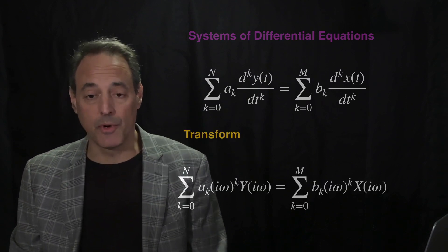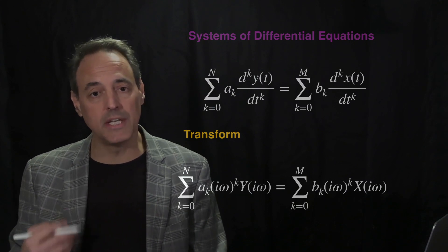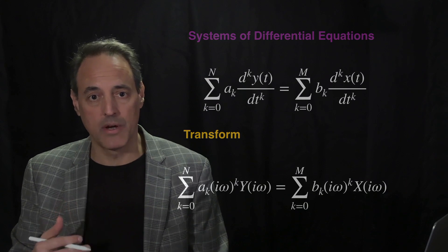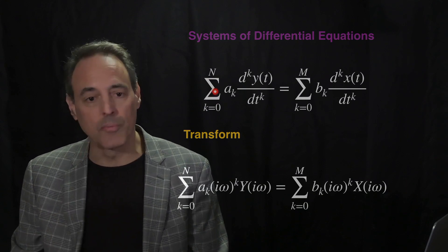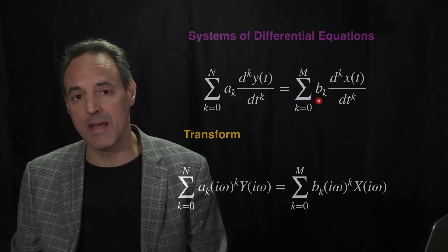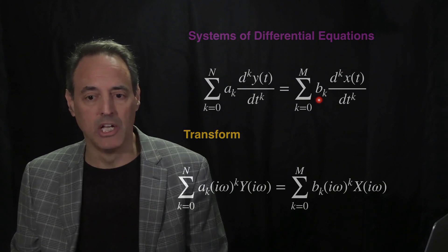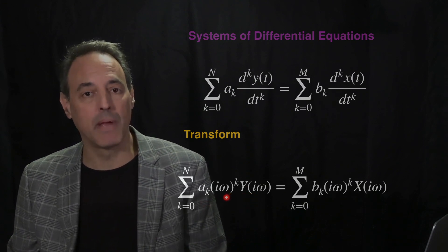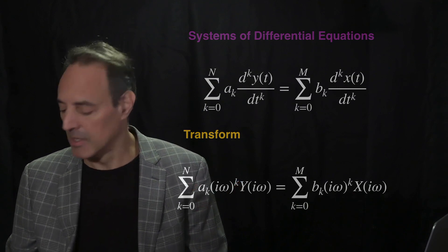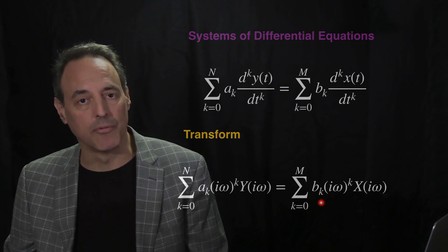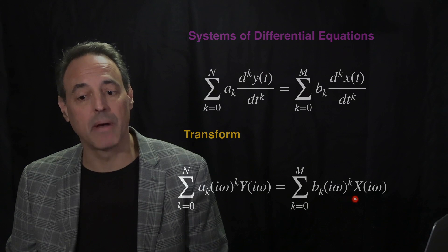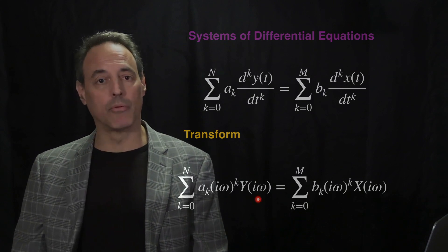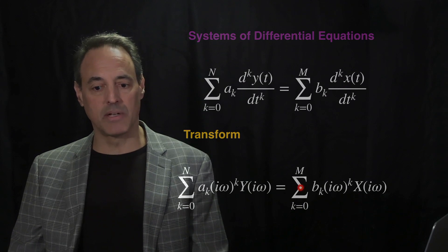Now we're going to Fourier transform this differential equation. Each derivative produces an iω out front — a second order derivative gives (iω)², a third order gives (iω)³, and up to nth order gives (iω)^n. When you Fourier transform the Y side, you get the Fourier transform of Y times a_k times (iω)^k, summing k from 0 to n. Similarly for the input, you get b_k times (iω)^k times the Fourier transform of X, summing from 0 to m. We can then pull the Fourier transforms of Y and X outside the sums.